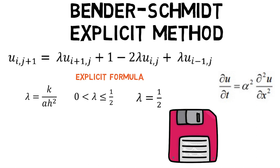If λ = 1/2, then the explicit formula is reduced to ui,j+1 = 1/2[ui+1,j + λui-1,j]. This formula is called the Bender-Schmidt formula.